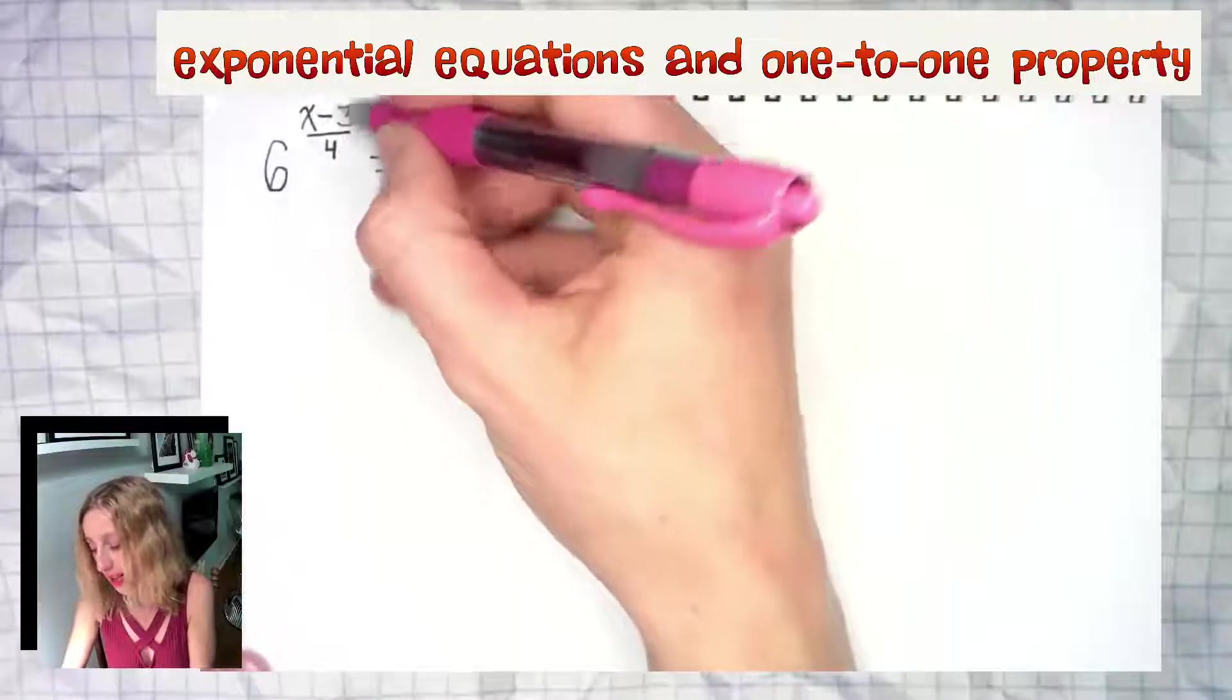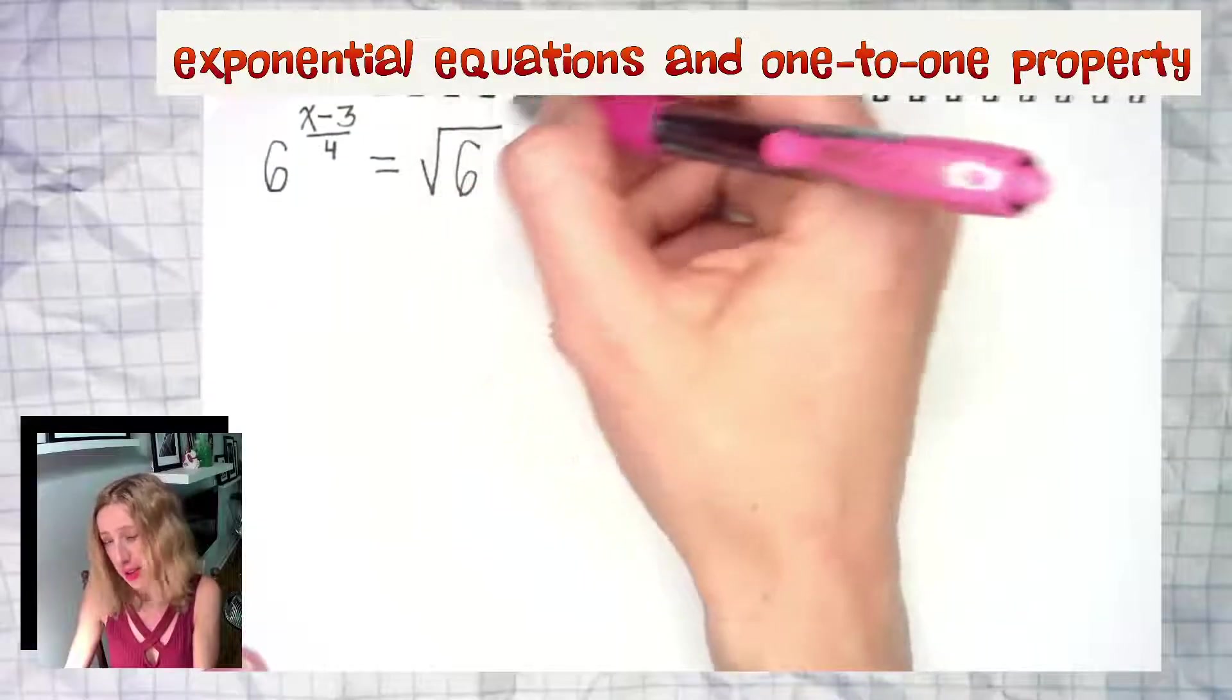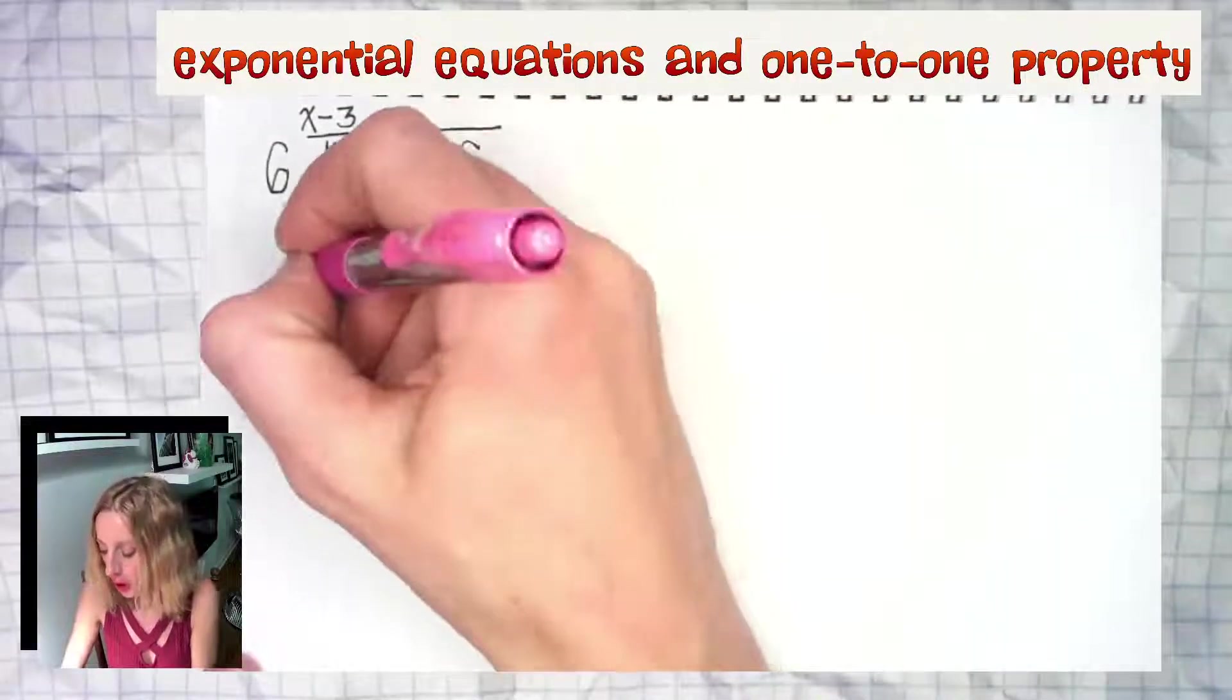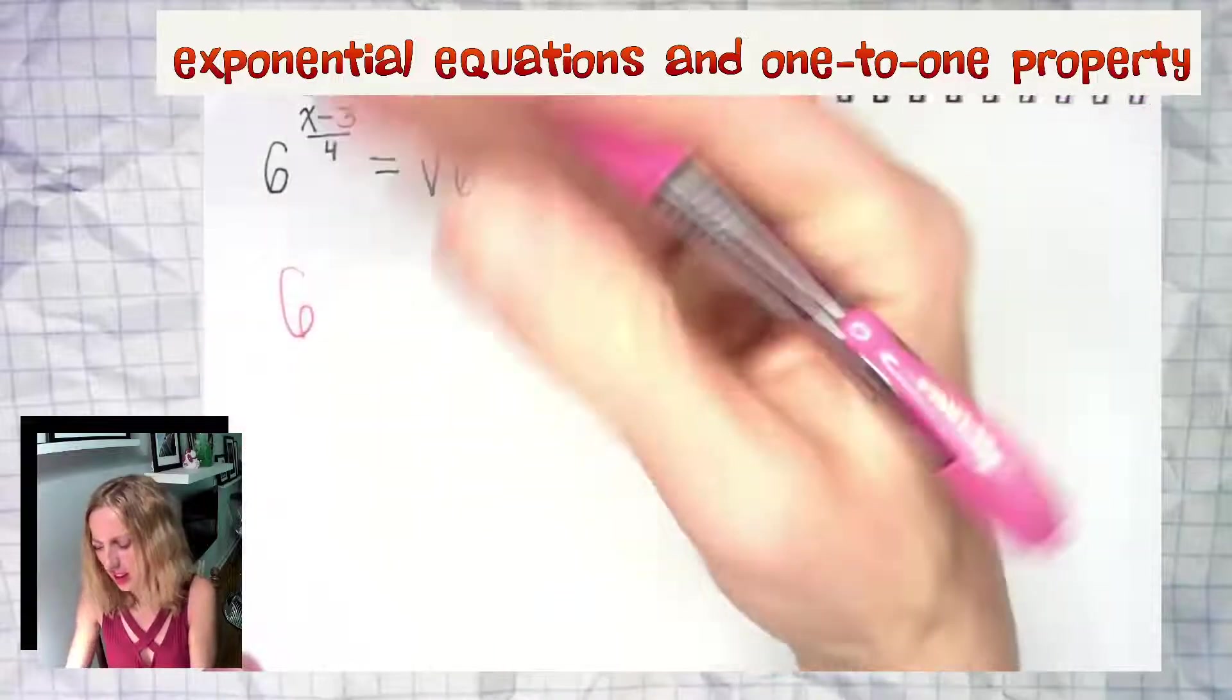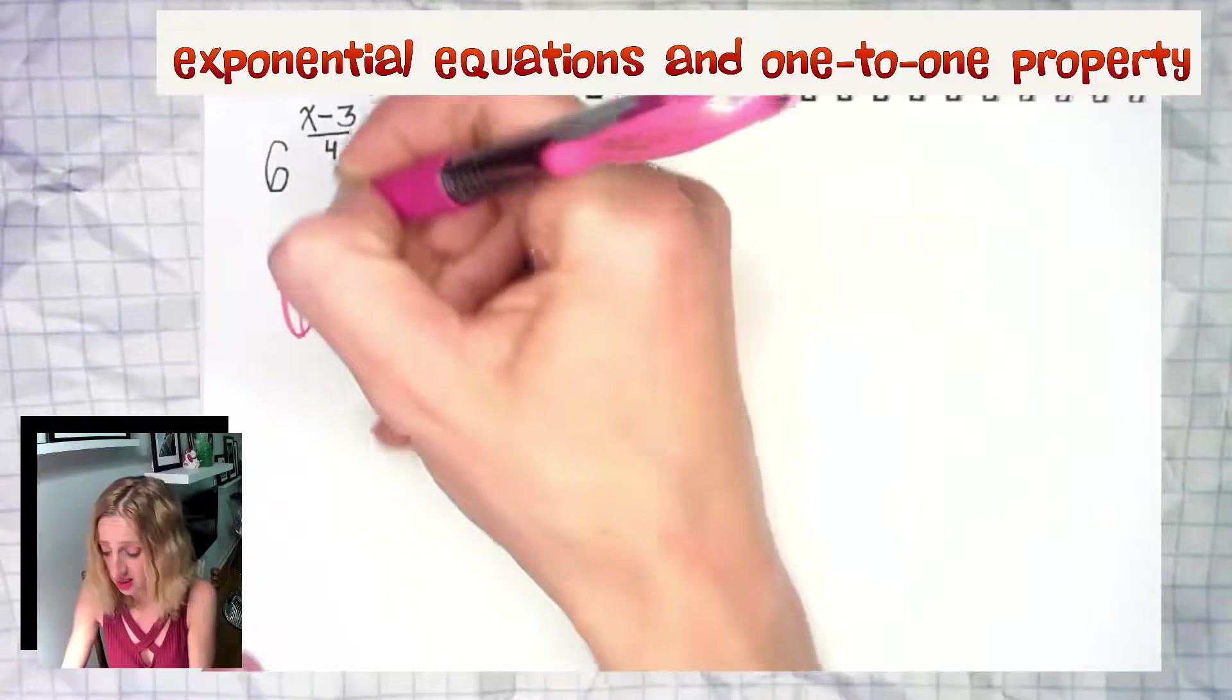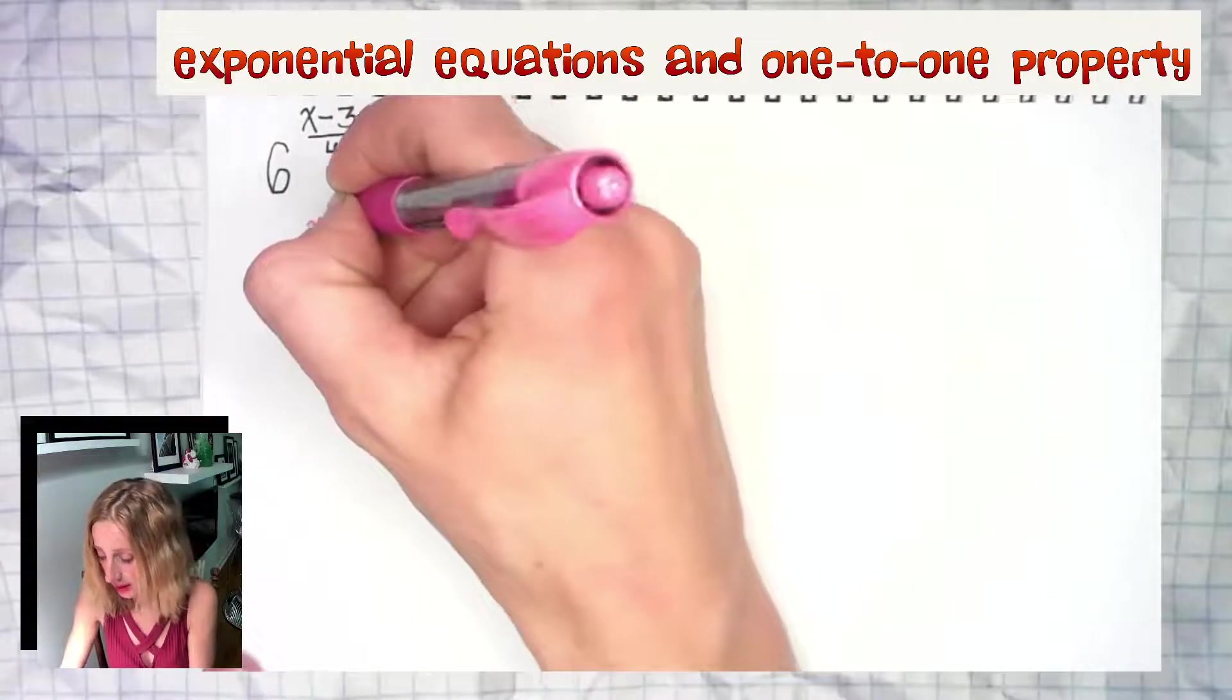Here we have an example that has a fraction as an exponent as well as a radical on one of the bases. The right side is the one that really needs the most work, even though some people might be freaked out by the left side. The left side is honestly nothing—x minus three over four, you're fine. Fractions are your friends.